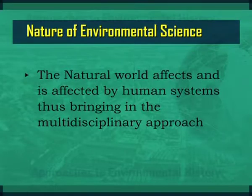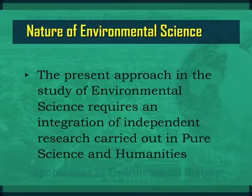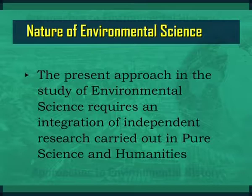Environmental science, at its initial stages, aimed at studying the working of the natural world. The natural world affects and is affected by human systems, thus bringing in the multidisciplinary approach. The present approach in the study of environmental science requires an integration of independent research carried out in pure sciences and humanities. From sciences, it is within subjects like atmospheric science, chemistry and biology. Further, oceanography and geology connect it with man. Ecology connects man with natural processes, and geography is a social science which brings natural processes into connection with human systems.